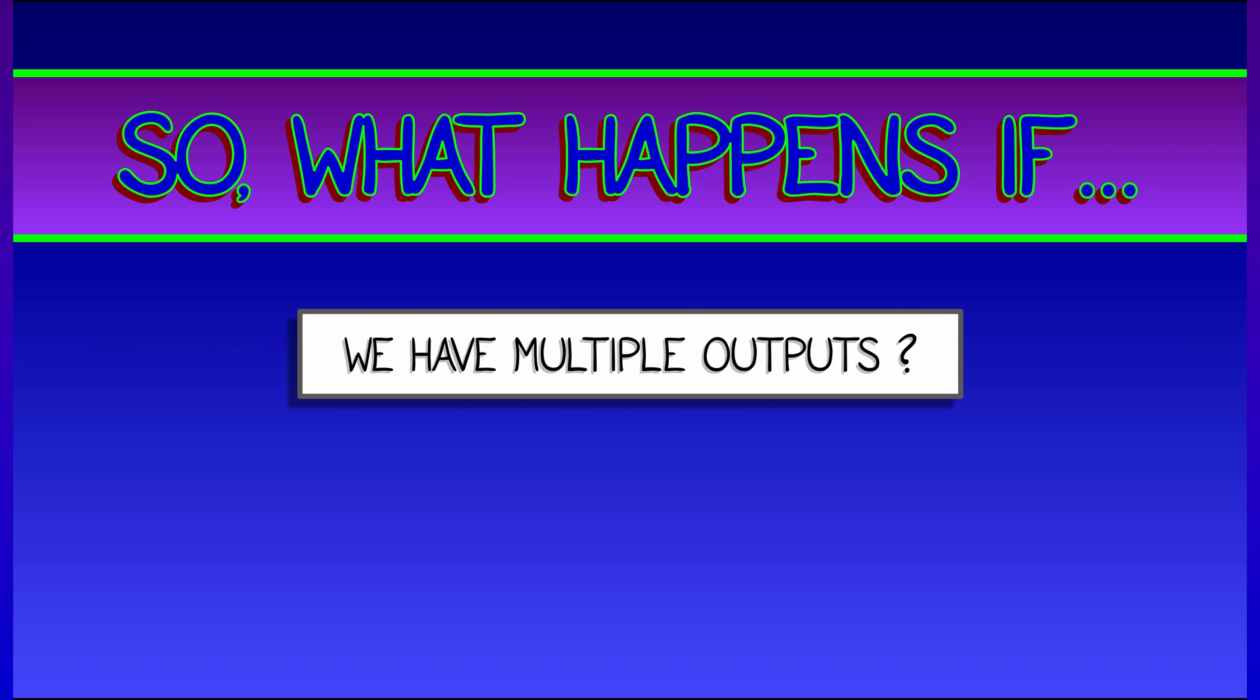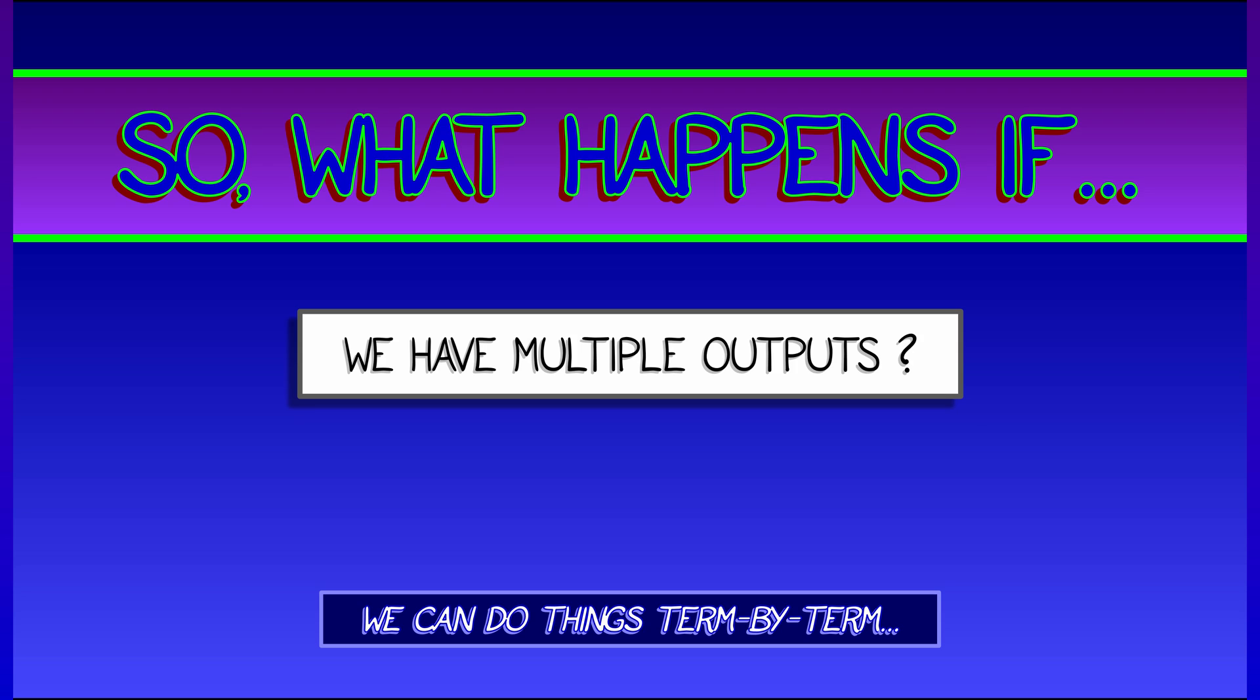Okay, so what happens now if we have a function with multiple outputs? Do partial derivatives still make sense? Can we do that? Sure, you just do things one output at a time.